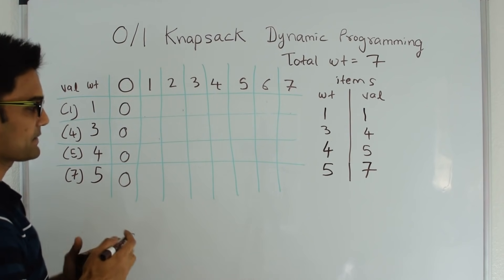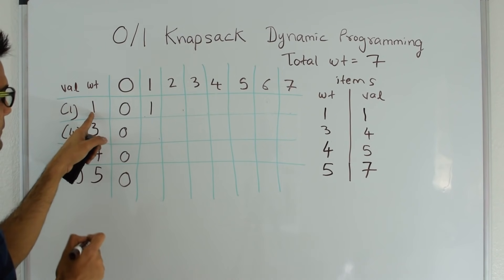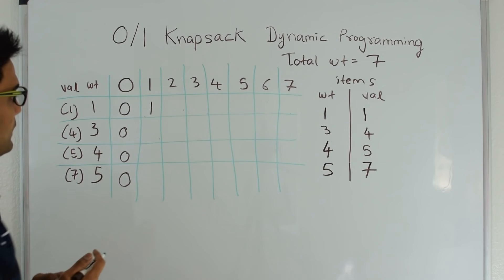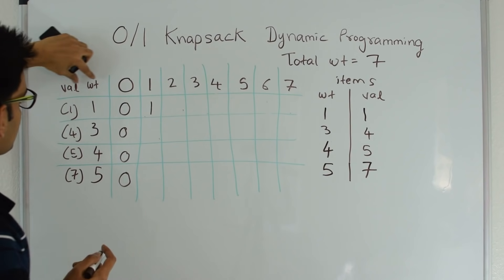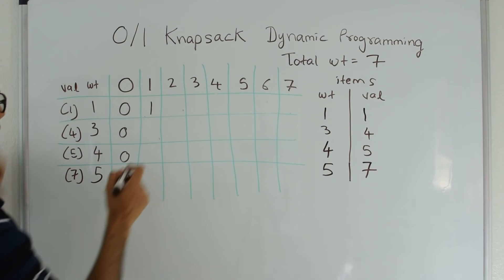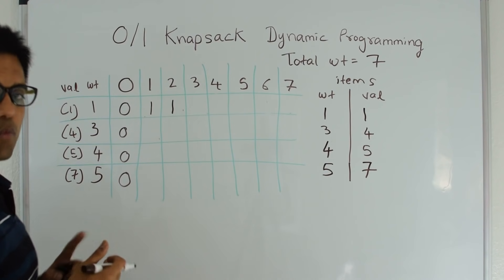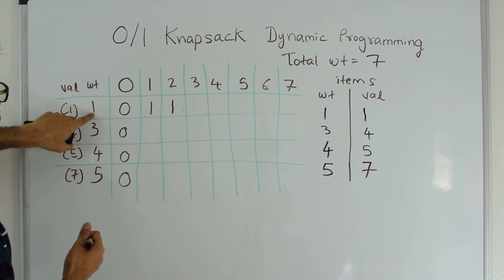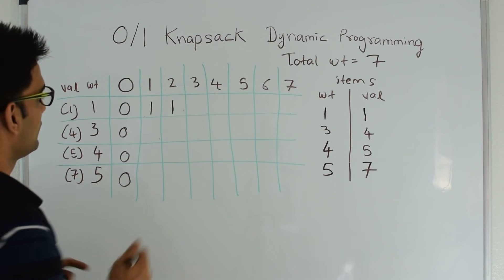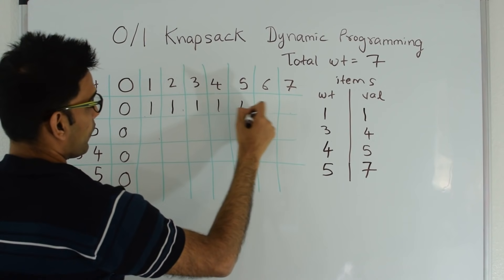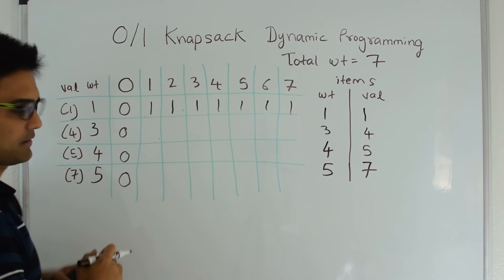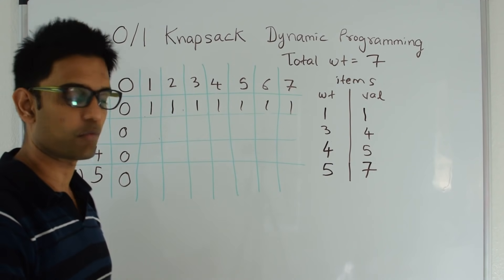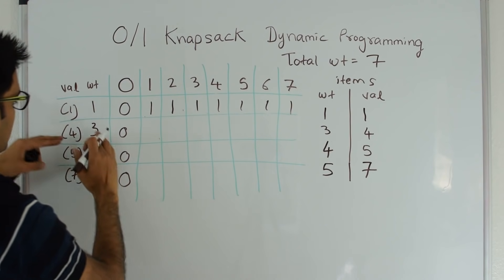If my total weight is 1 and I just have item 1 with weight 1 and value 1, the best I can do is 1. If my total weight is 2, with just that one item of weight 1 and value 1, the best I can do is still 1 — remember we have just one quantity of each item. Similarly, all the way to total weight 7: if the only item is weight 1 with value 1, the best I can do is 1.